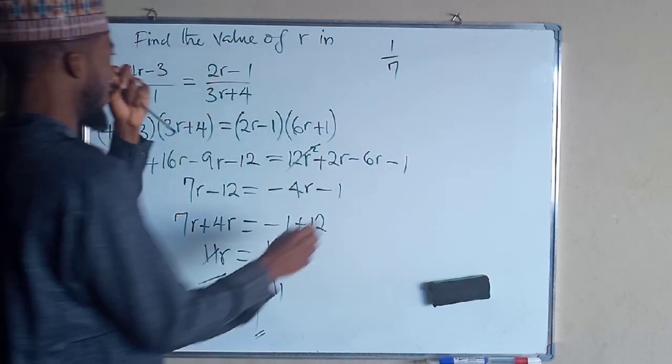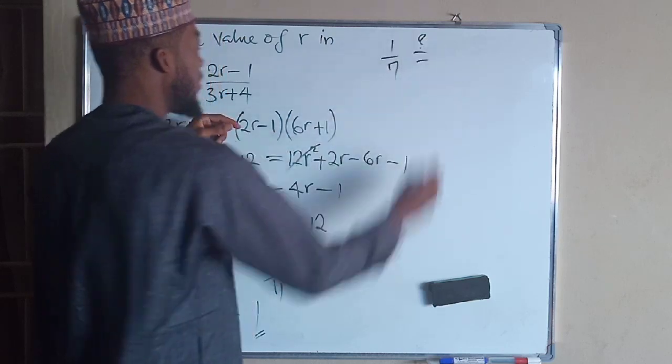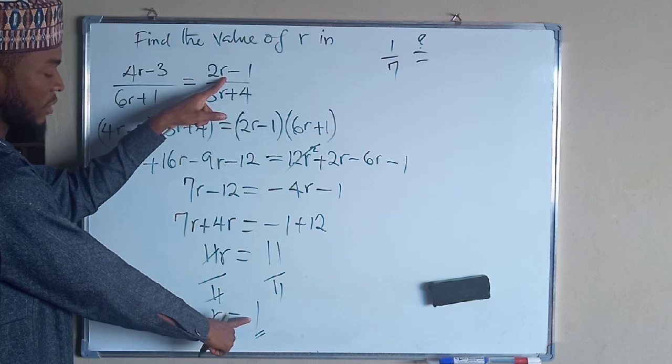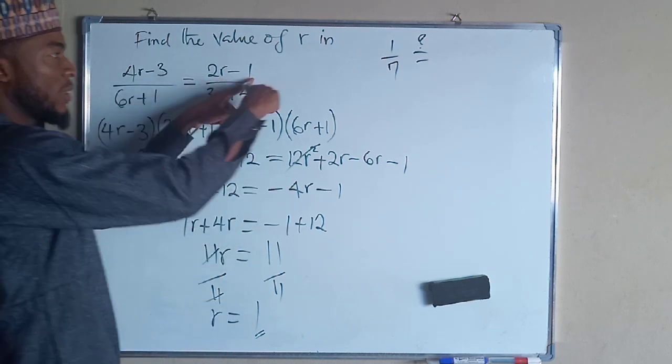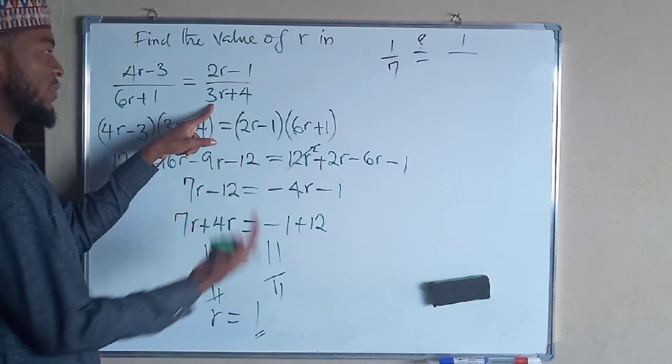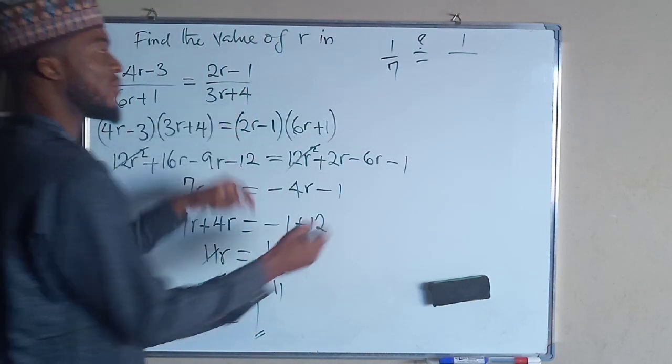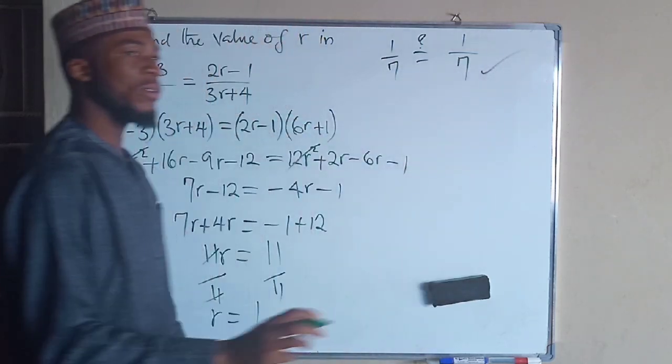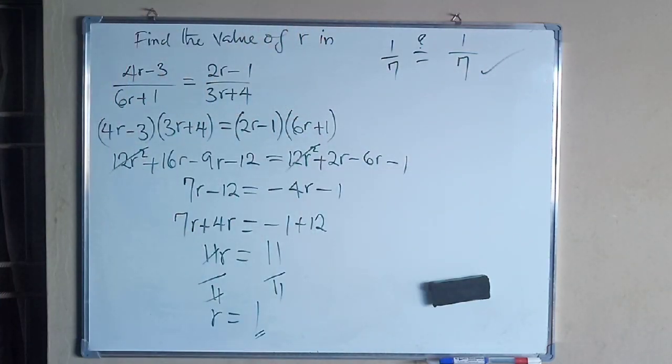Then on the right-hand side, we want to see whether it is the same or not. 2 times 1 is 2, then 2 minus 1 is 1, divided by 3 times 1 is 3, then 3 plus 4 is 7. Therefore, left-hand side is equal to right-hand side. Hence, the real value of R is 1.